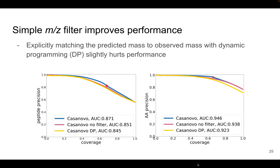To better understand the source of performance improvements in our model, we conducted ablation and variation studies. Most importantly, we analyzed the impact of the simple m/z filter on performance. When comparing three versions of the model — the standard version which uses the filter, one without the filter, and a third version using the dynamic programming approach adopted by earlier de novo sequencing methods, which explicitly matches the mass of the predicted peptide with the observed precursor mass — we see that the simple m/z filter improves performance not just over the no-filter version, but also over dynamic programming, both at the peptide level and at the amino acid level.